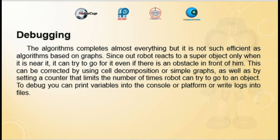Our algorithm completes almost everything, but it is not as efficient as algorithms based on graphs. Since our robot reacts to a super object only when it is near it, it can try to go to it even if there is an obstacle in front of it. This can be corrected by using cell decomposition or simple graphs, as well as by setting a counter that limits the number of times a robot can try to go to an object.